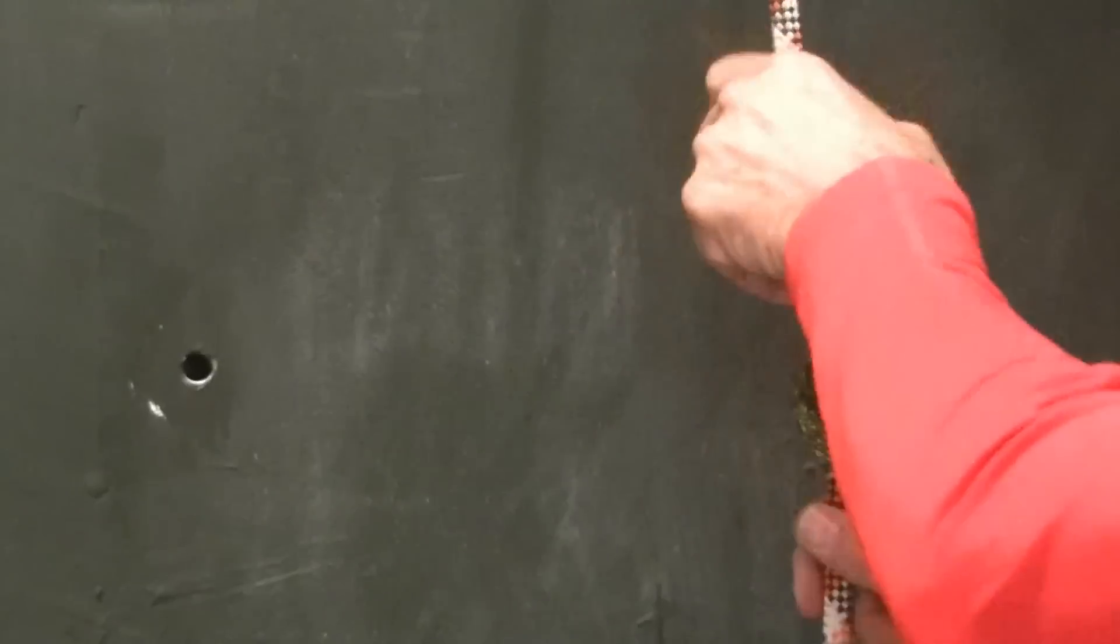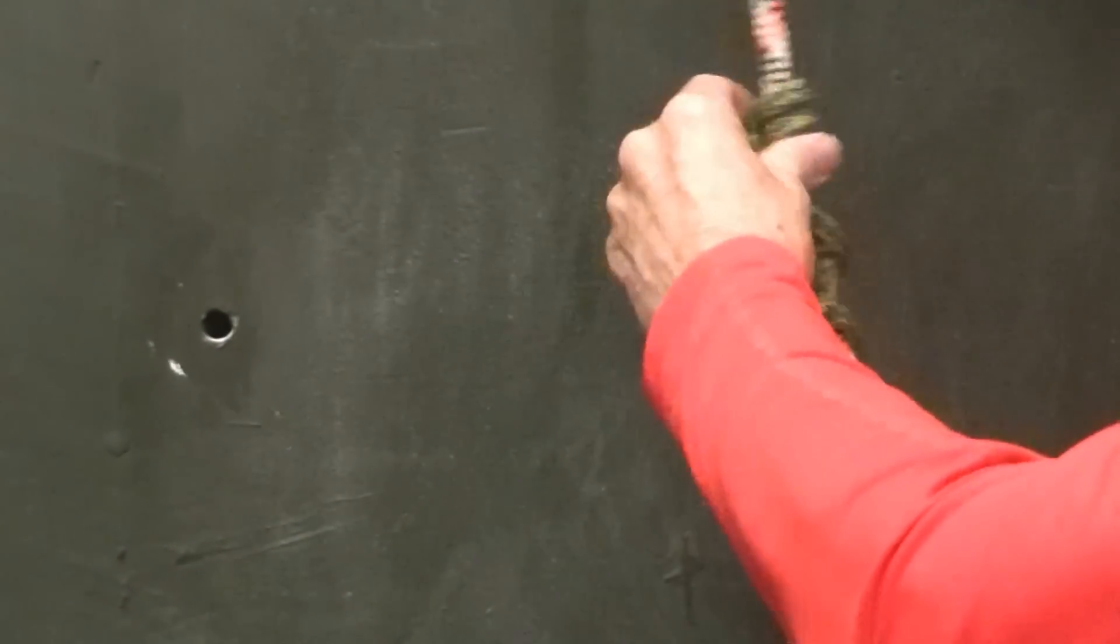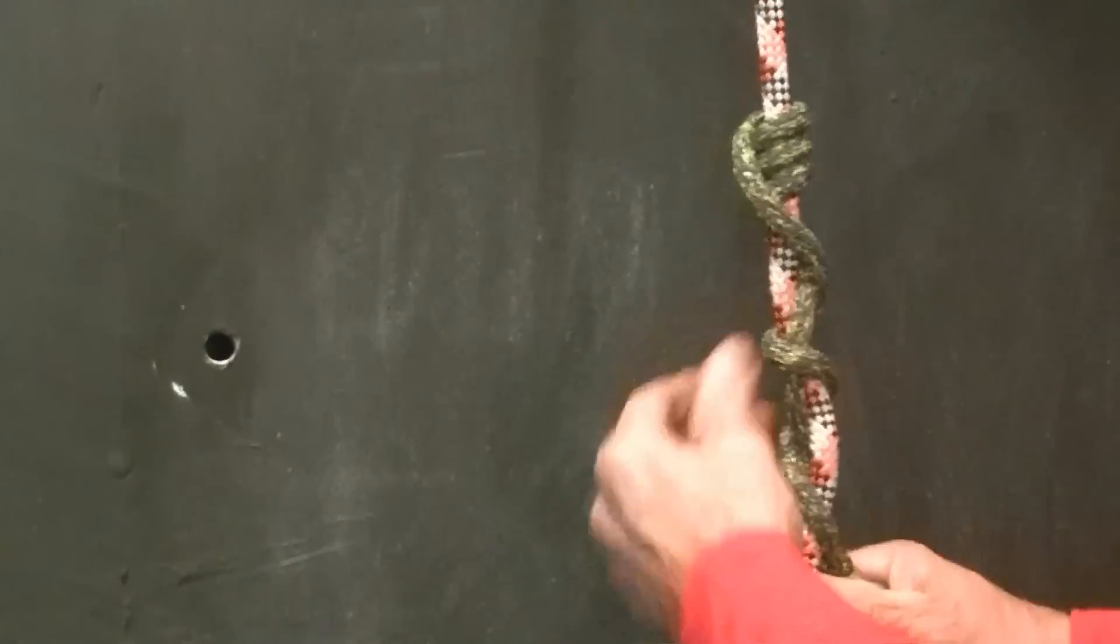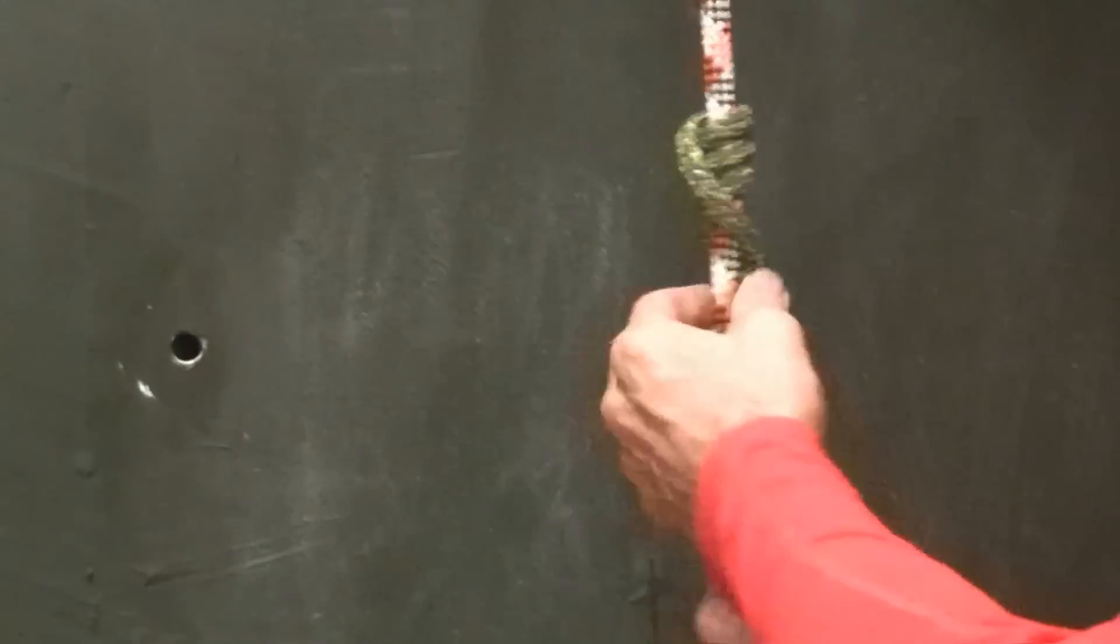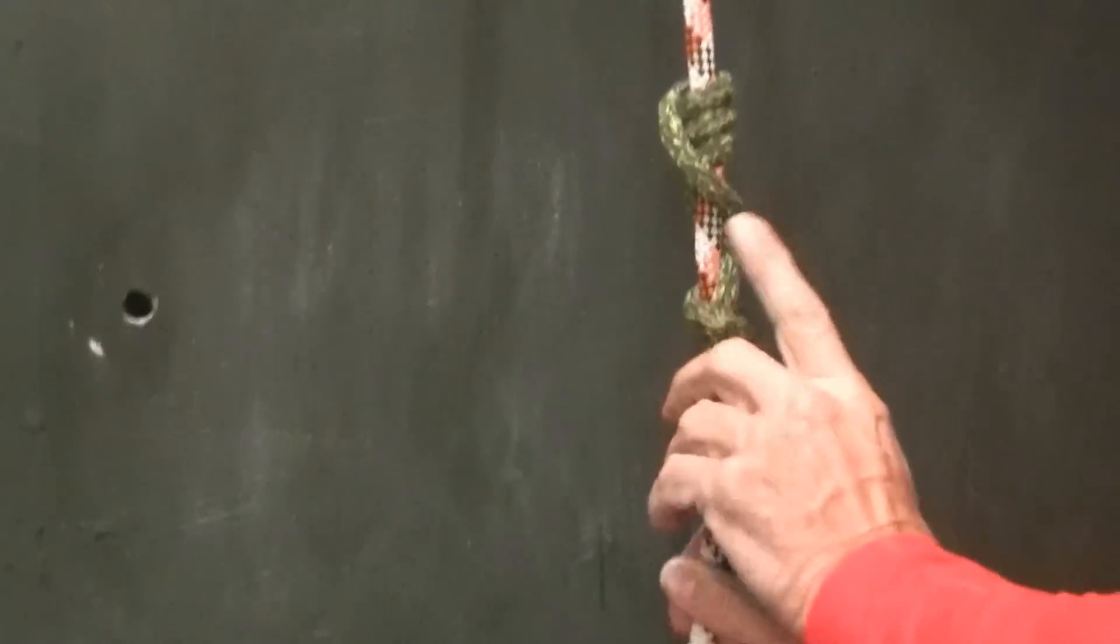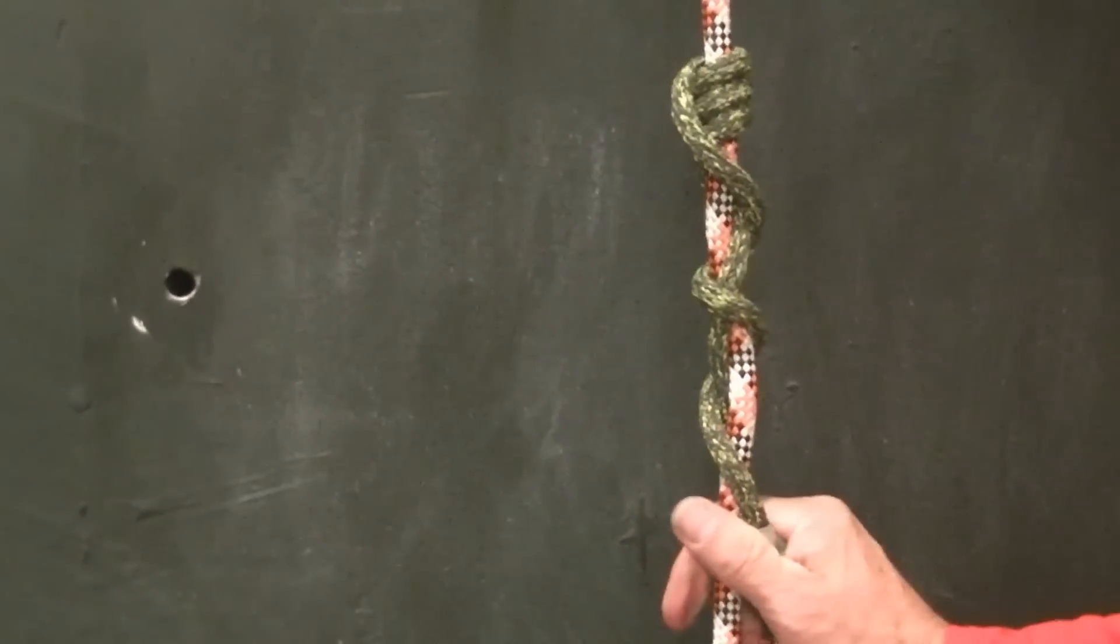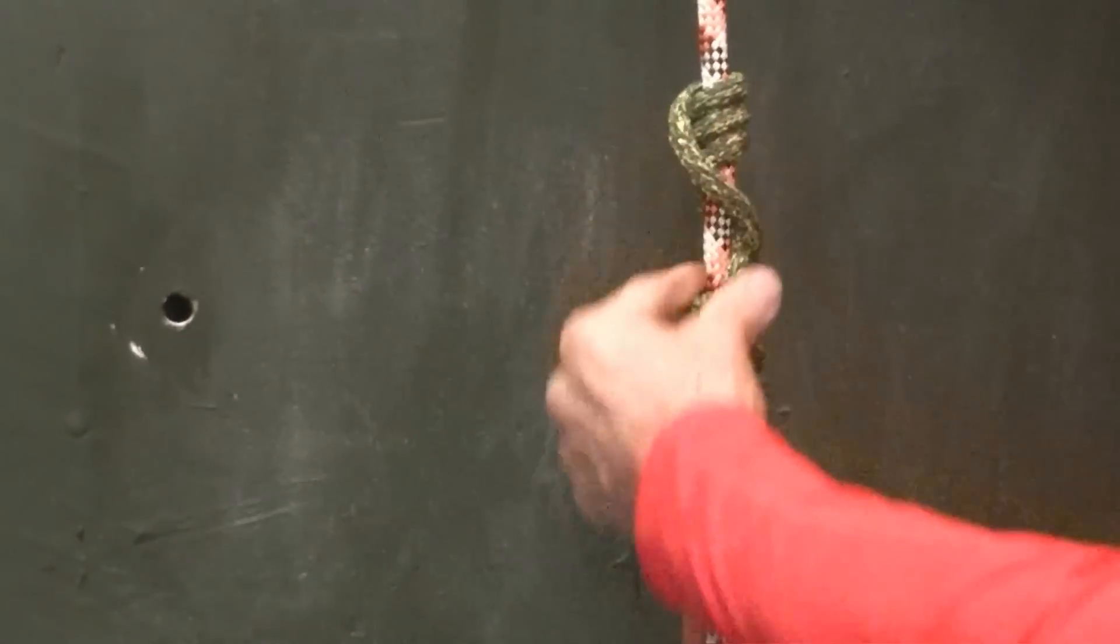If I do continue that down, cascade that one more time, now I have one, two, three braids and three wraps. Again, not the best way to make the hitch, but it demonstrates how to count those.